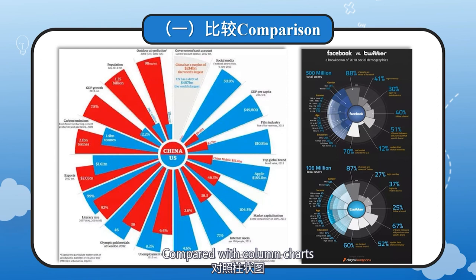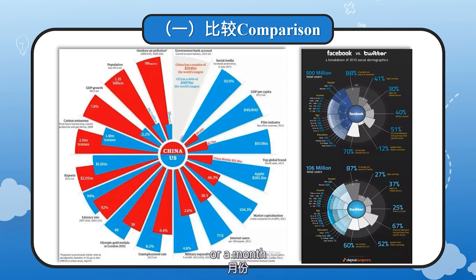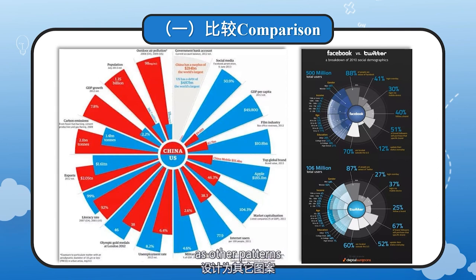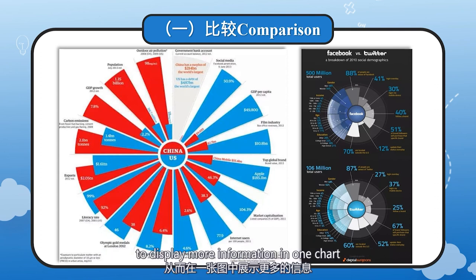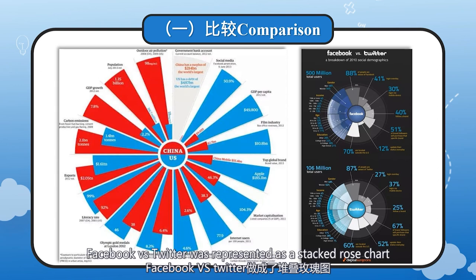Compared with column charts, due to the circular characteristics, a Rose chart is also suitable for representing time concepts within a cycle, such as a week or a month. In practical application, many Rose charts design the center of the chart as other patterns and stack the ring sections, which is the same as polarizing the stacked bar chart, to display more information in one chart. For example, Facebook versus Twitter was represented as a stacked Rose chart.